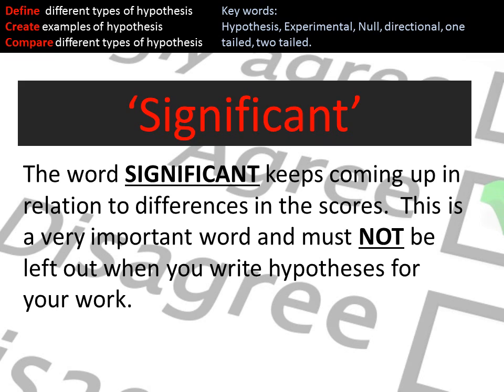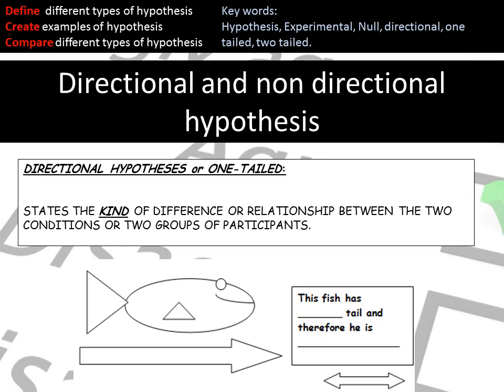The word 'significant' is really important. You must use it when referencing your hypotheses and null and experimental hypothesis. We talk about this later with inferential statistics and probability of significance, but make sure that the word 'significant' is always included.